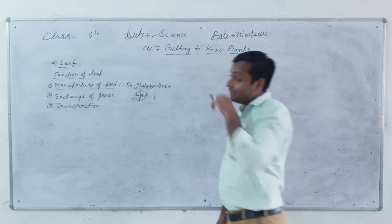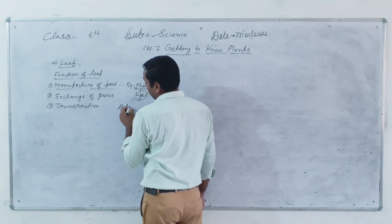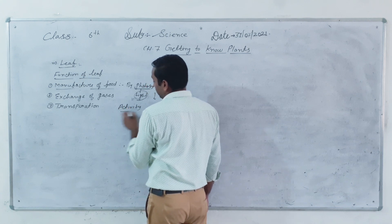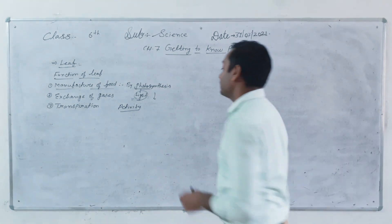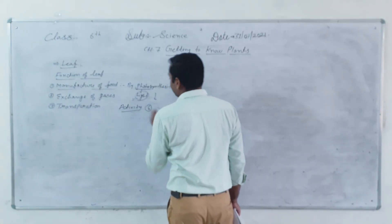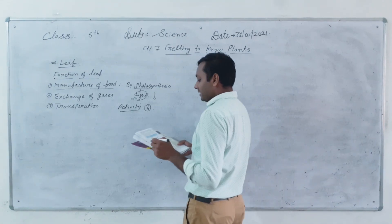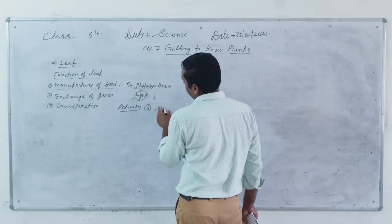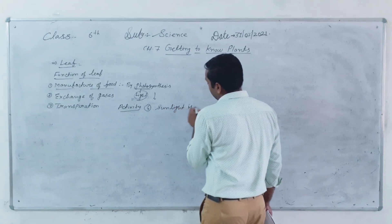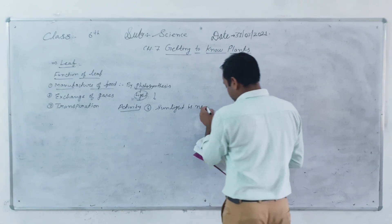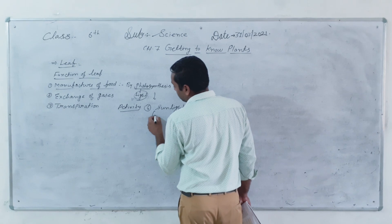Light is required. So we have to prove this with Activity number 6. What do we prove? Sunlight is necessary for photosynthesis.